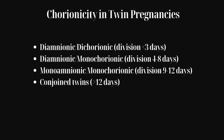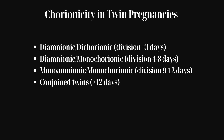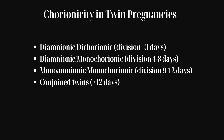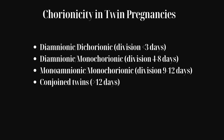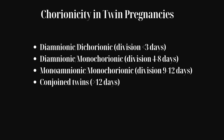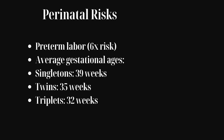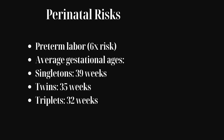When twins share a single placenta but have individual amniotic sacs, they are termed diamniotic monochorionic. A division occurring between nine and twelve days results in monoamniotic monochorionic twins, where both fetuses share the same amniotic sac.